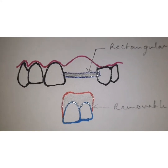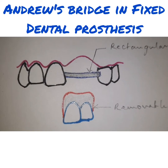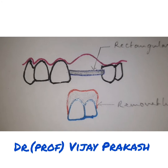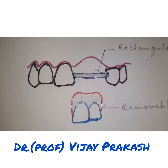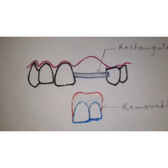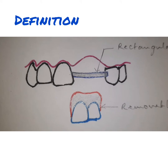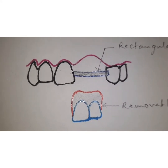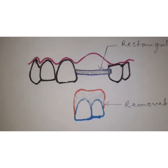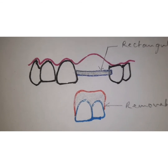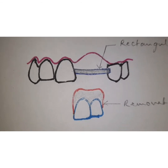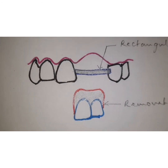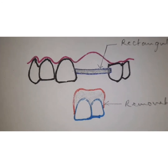Hello friends, I am Dr. Vijay Prakash and today I will be telling you about Andrew's Bridge. Andrew's Bridge by definition is a combination of fixed dental prosthesis incorporating a bar with a removable dental prosthesis that replaces teeth within the bar area, usually used for edentulous anterior spaces.